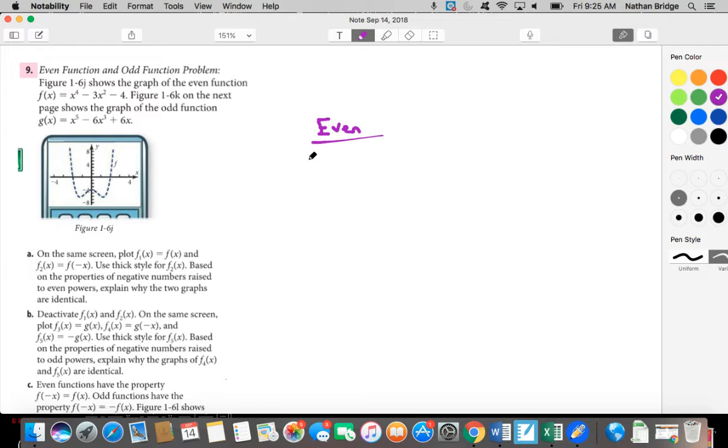A function is even if for some function f, if you input into f the opposite value a, so if a is a positive number, you input a negative number, and if you put a negative number, you get out, if it's a negative number, then negative opposite a would be a positive number. You get out what f would have been if it was just a. That's what it means to be an even function, just as a definition.